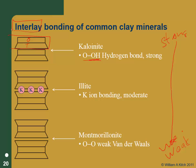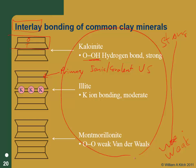Realize the interlayer bonding is much, much weaker than the inter-sheet bonding. The inter-sheet bonding is a primary bond - ionic/covalent - so that's very strong. All the interlayer bonds are much weaker than that primary bond. But the hydrogen bond is the strongest of them and they get weaker in this direction.